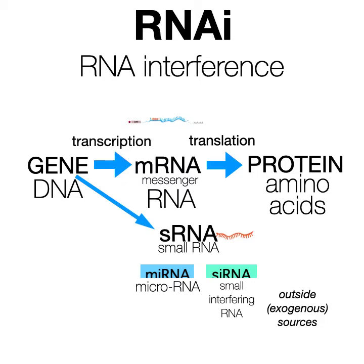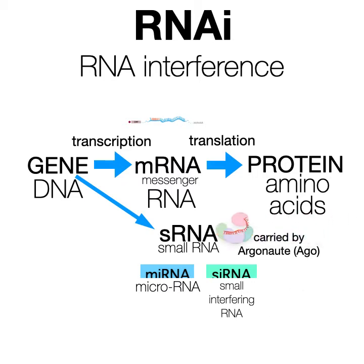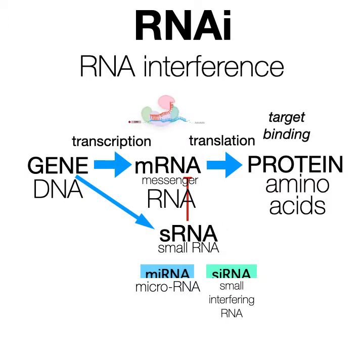These small RNAs, which are about 20 nucleotides long, bind to a protein called Argonaute, or AGO. AGO uses them as guides to find target messenger RNAs that contain sequence complementarity, at least to the beginning part of the microRNA, which we call the seed sequence. That's about six to eight nucleotides long where you have to have a perfect match in that region most of the time. The target can also have different amounts of complementarity outside of that seed region.